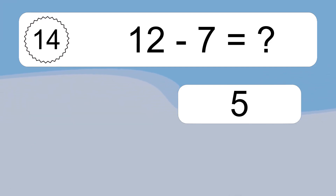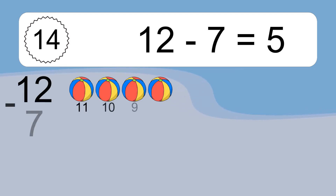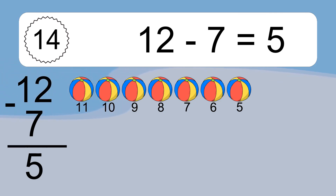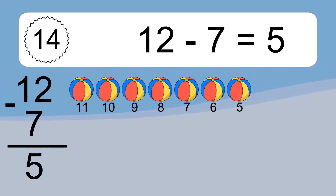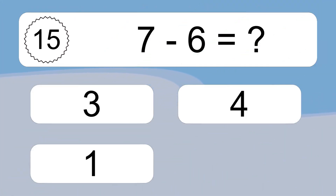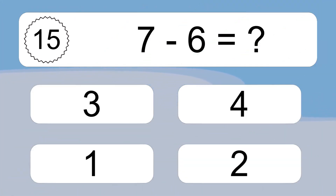12 minus 7 equals what? 12 minus 7 equals 5. Let's count it: 11, 10, 9, 8, 7, 6, 5.